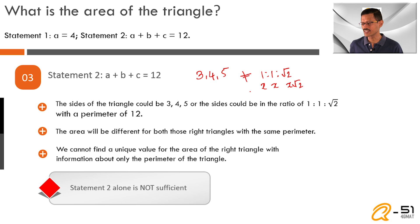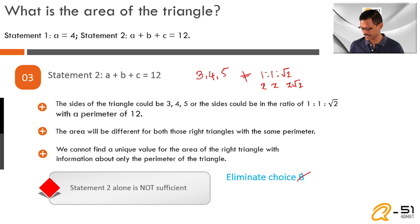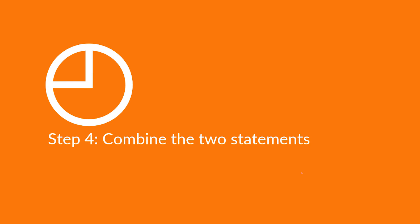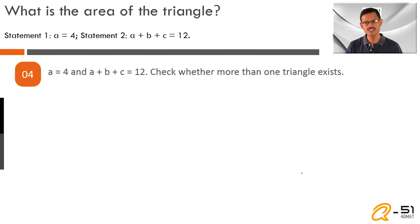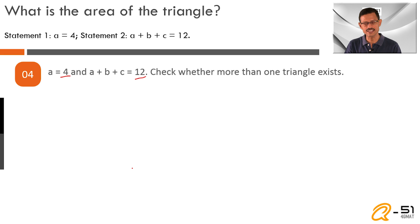Once statement 2 is not sufficient, we eliminate choice B as well. At the end of statement 1 we had eliminated A and D; now eliminating B, we are left with C or E. To decide whether it is C or E, let's combine the two statements. Combining them gives us: one of the sides equals 4, and the perimeter equals 12. The key question is whether these two pieces of information lead to only one unique set of values for the three sides of the triangle.